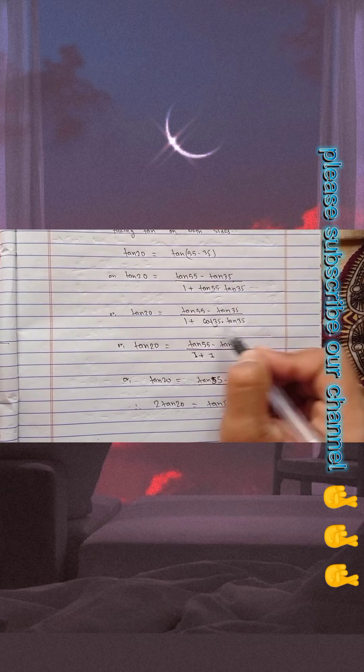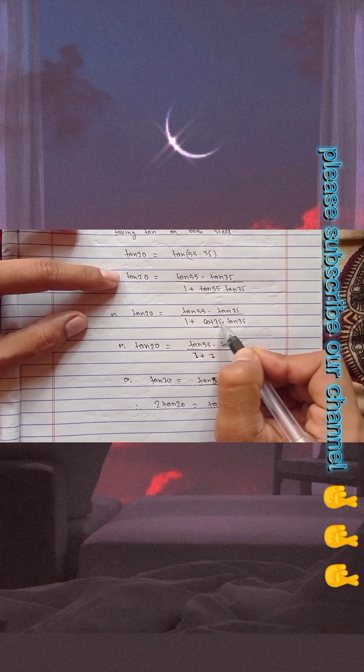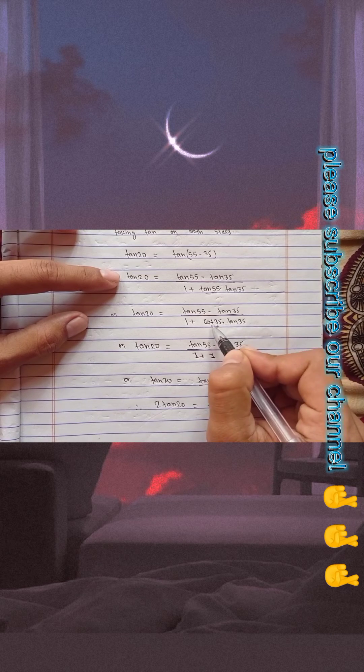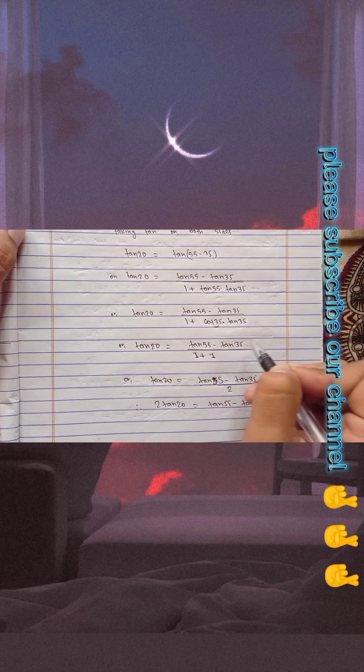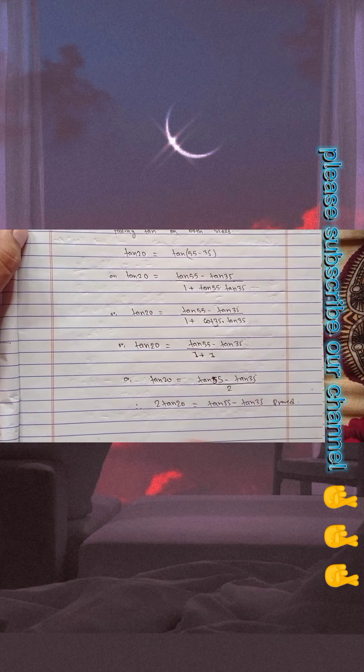In the next step, you can see cot35° into tan35° - this is cotA into tanA type, and cotA into tanA is 1, so cot35° into tan35° is 1. And 1 plus 1 is 2.